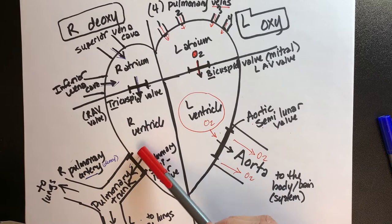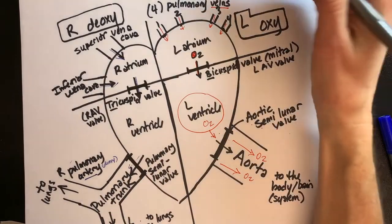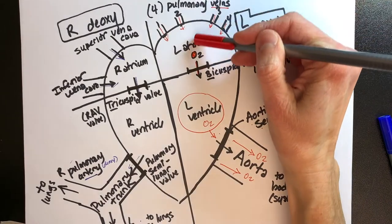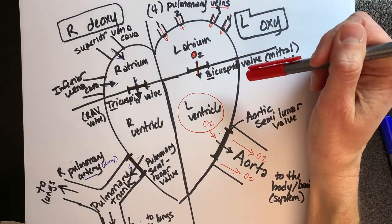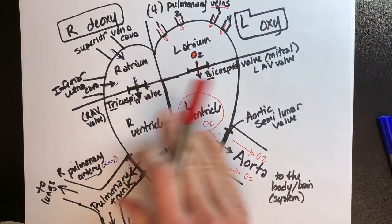So I can send a message of deoxygenated blood to the lungs through the pulmonary trunk on the right side, and then I can return the message back to the heart through the four pulmonary veins on the left side with the oxygen. The lungs are the interface between these two sides.